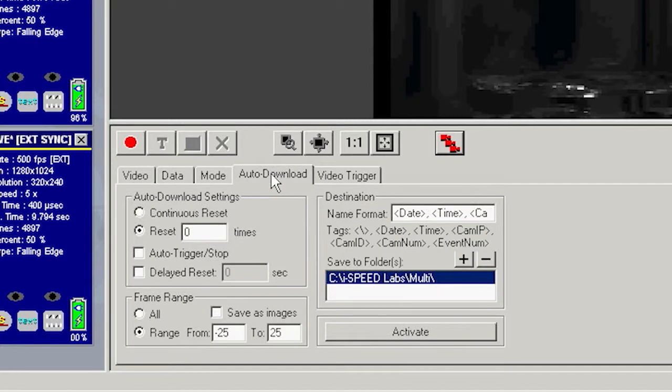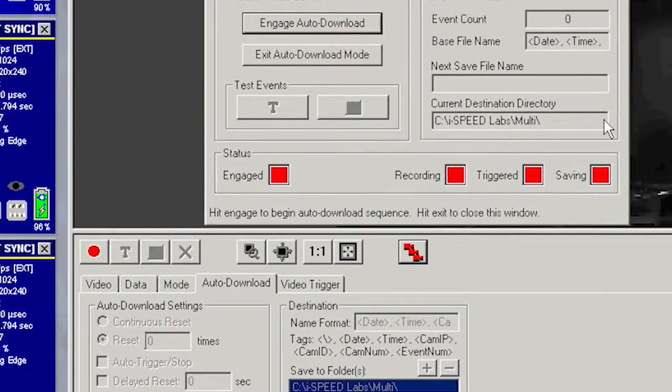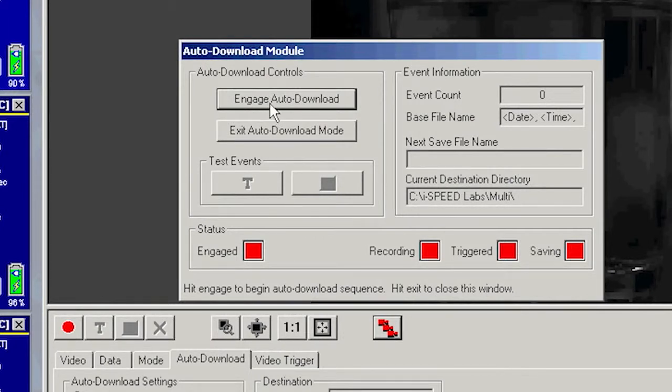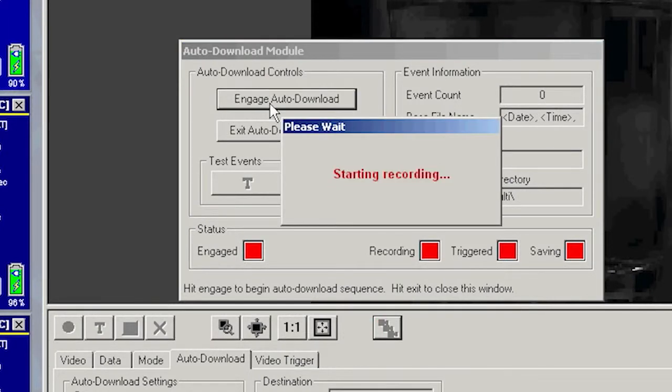Today I'm going to use the auto download feature of the Control Pro software. I'll click on activate and it will now ask me to engage the auto download. So I click that and the recording sequence will begin.